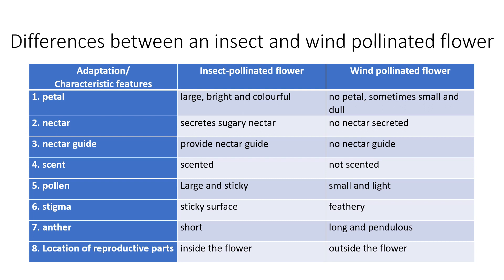Regarding the pollen: in the insect-pollinated flower, the pollen must be larger than that of the wind-pollinated flower and must be sticky, so it can attach to the hairy body and legs of the insect. In the wind-pollinated flower, the pollen must be small and light for easy flight using the wind.